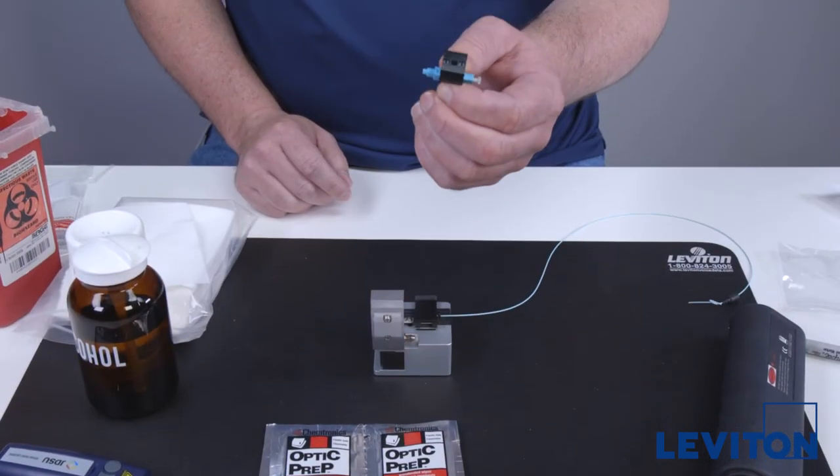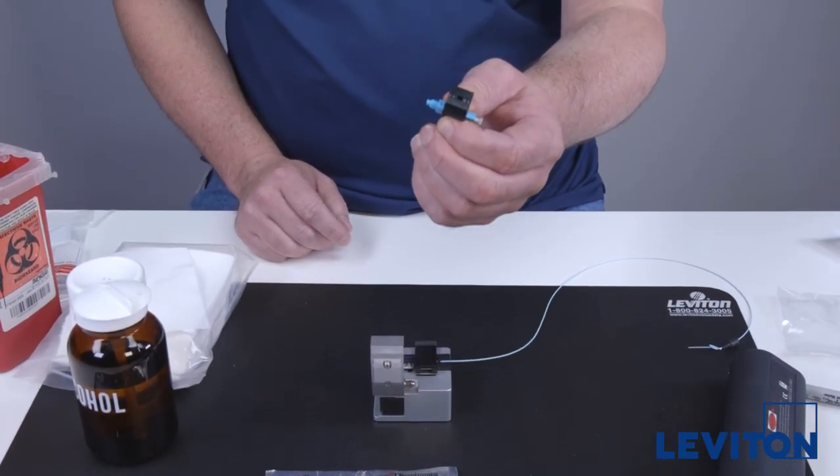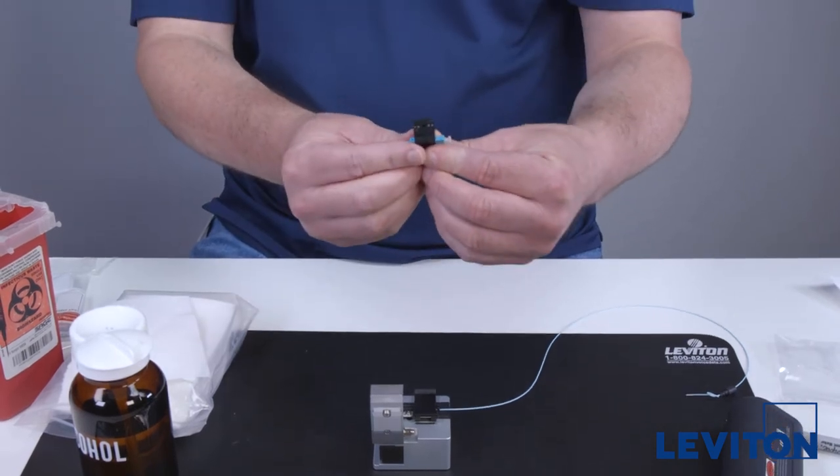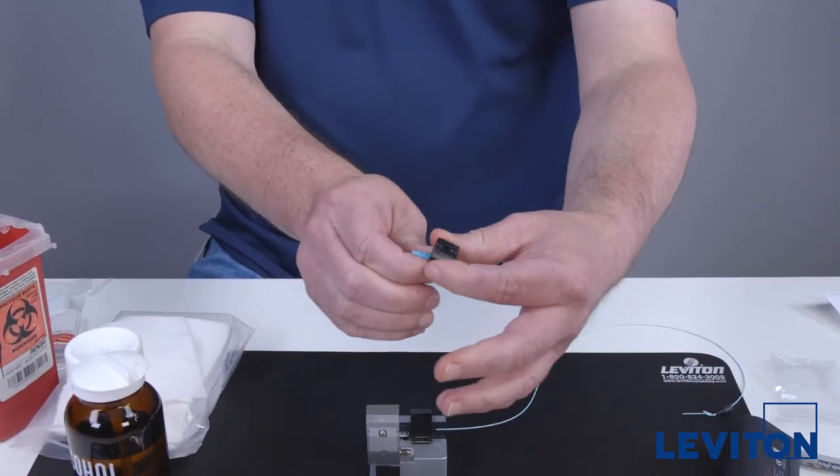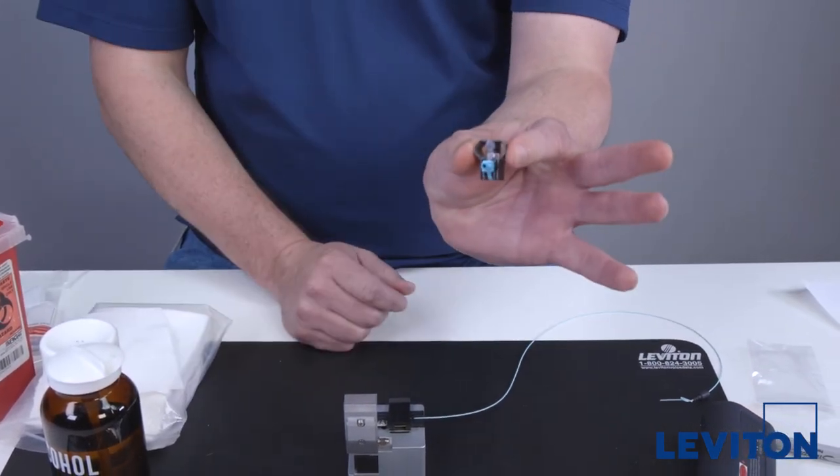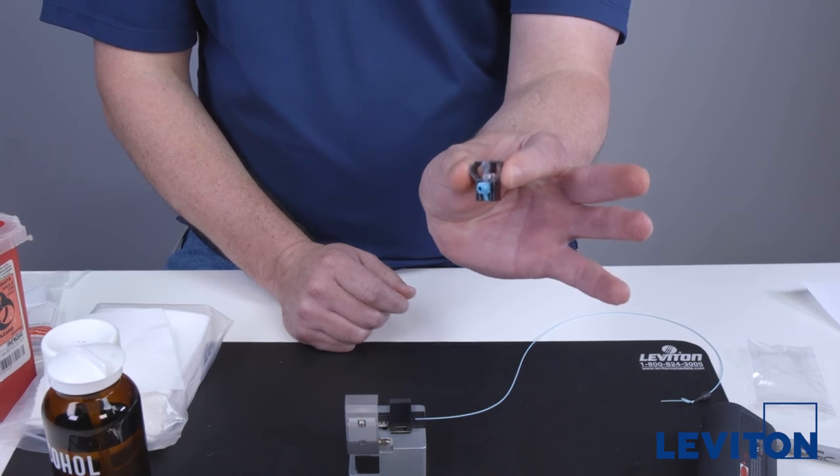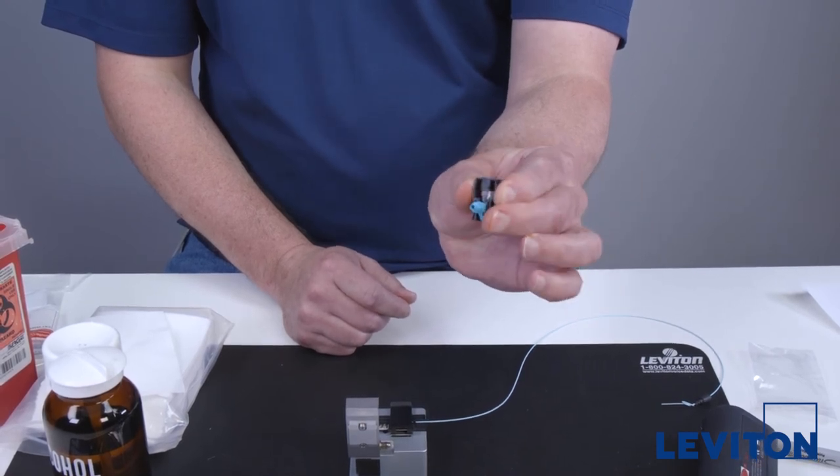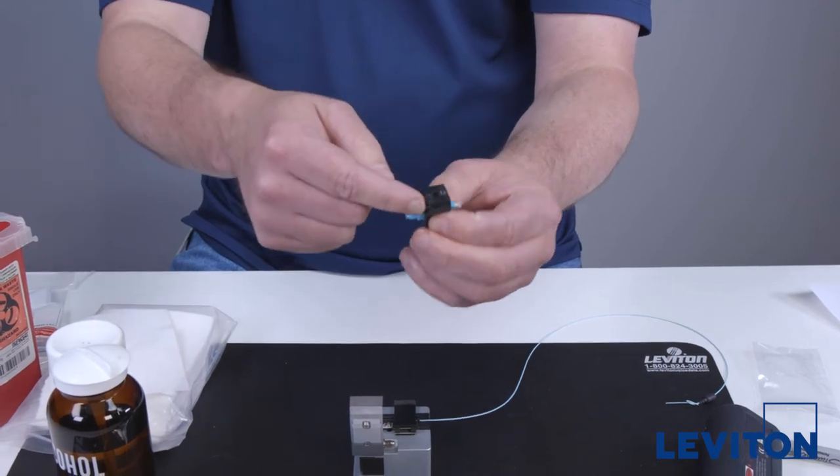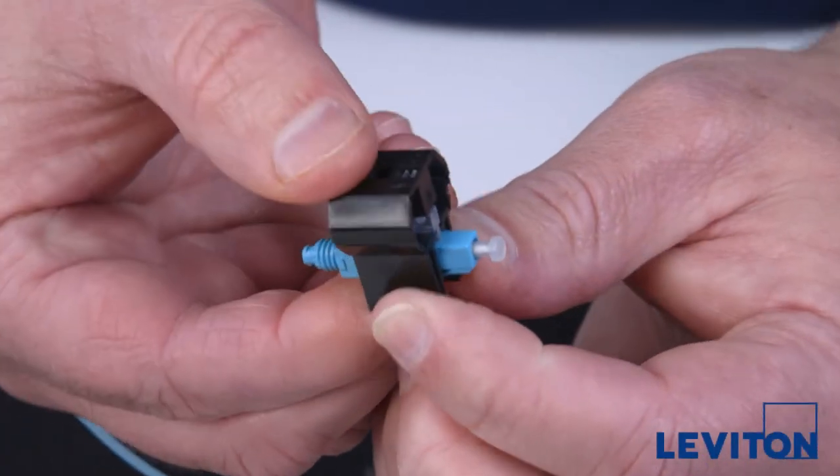The fiber connector comes with wedge clips already installed. However, it is important to reset the clips prior to termination. To remove and reseat the wedge clips, squeeze the clip from the outside. Both wedge clips will release with a click. Now reseat each clip into the connector one at a time.